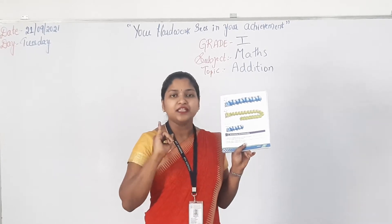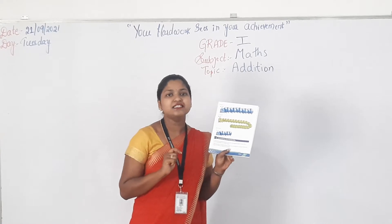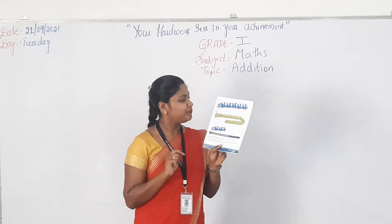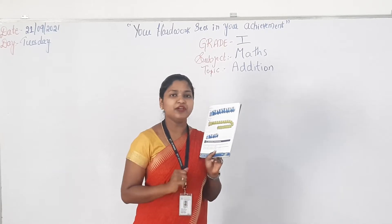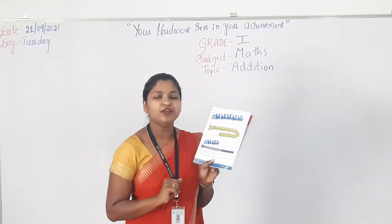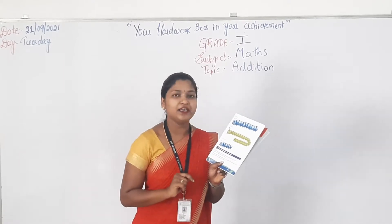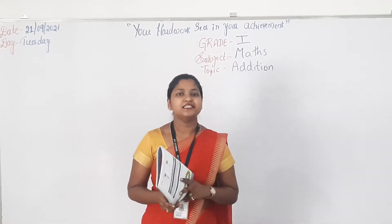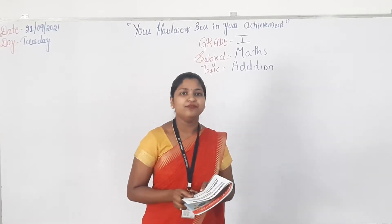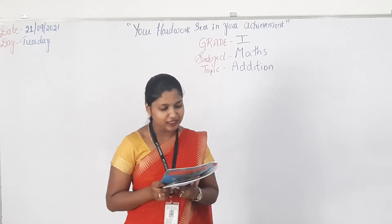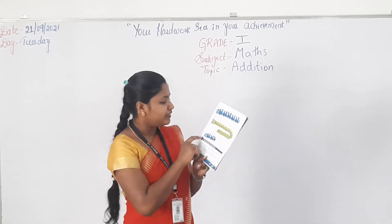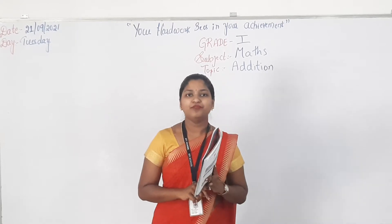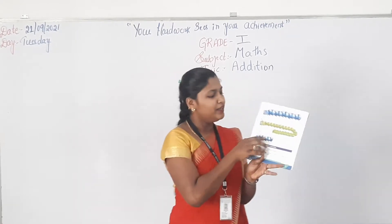Shall we count from 33? 33, 34, 35, 36, 37, 38, 39, 40, 41, 42. Then C: 26 to 45. Tell me from 26: 26, 27, 28, 29, 30, 31, 32, 33, 34, 35, 36, 37, 38, 39, 40, 41, 42, 43, 44, 45. Then D: 21 to 25 — 21, 22, 23, 24, 25. These you have to complete.